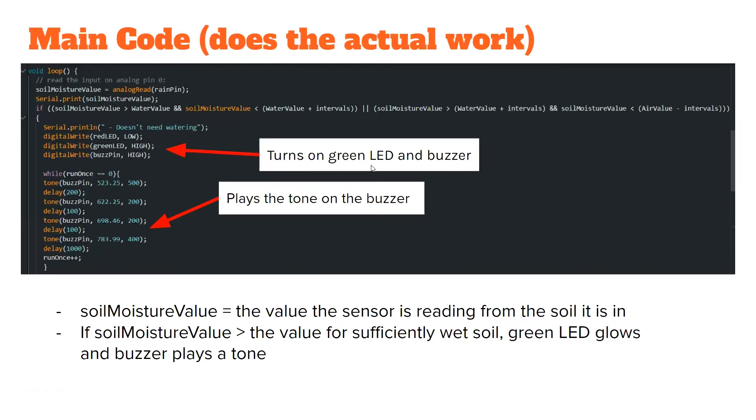Here are the lines that use the values we calculated before to determine what we want to know. Is there enough water in the plant? Like you saw in the demo video, you place the sensor in soil, and the soil moisture value corresponds to the reading the sensor gives the computer. If the soil moisture value is greater than the value for sufficiently wet soil, these three lines tell the green LED to glow, and these lines tell the buzzer to play the tone you heard in the video earlier.